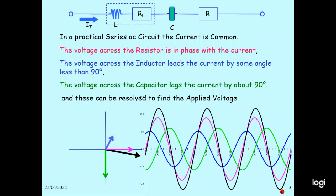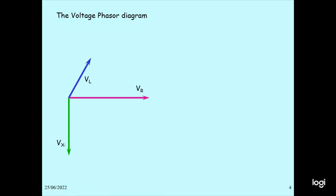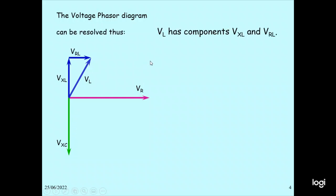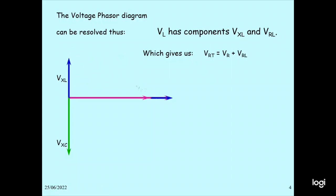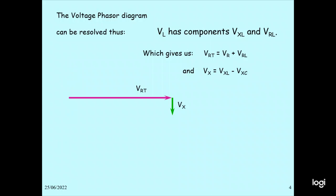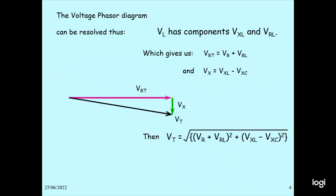This can be resolved by finding the applied voltage — the applied voltage is shown as the black one in the voltage phasor diagram. You can see VR is the voltage across the resistor, VC is the voltage across the capacitor, and VL is the voltage across the inductor. These can be resolved: the applied voltage V equals the square root of VR squared plus (VL minus VC) squared.